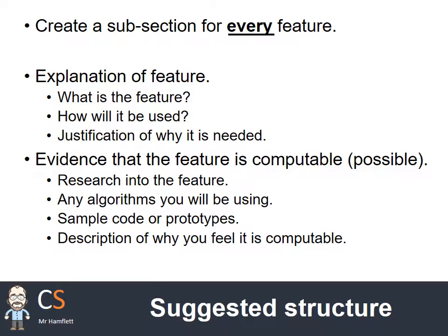A suggested structure: create a subsection for every feature. Have an explanation of the feature — what is it, how is it going to be used — and the justification of why it's needed. Then provide evidence that the feature is computable: research into that feature and the algorithms you could use, sample code, prototypes, and a description of why you feel it's computable. Have every feature following the same pattern — if you're consistent, you're not going to miss anything and it's going to be easier to mark.